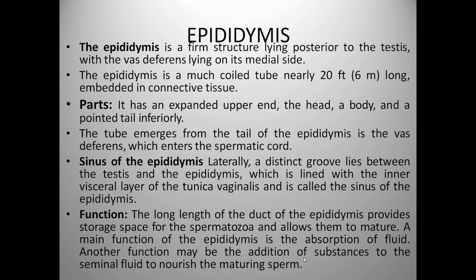Now we will see the anatomy of the epididymis. The epididymis is a firm structure lying posterior to the testis with the vas deferens lying on its medial side. It is a coiled tube nearly 6 meters long embedded in connective tissue. It has an expanded upper end called the head, a body, and a pointed tail inferiorly. The tube that emerges from the tail of the epididymis is the vas deferens, which enters the spermatic cord. Laterally, a distinct cleft lies between the testis and the epididymis, lined with the inner visceral layer of the tunica vaginalis, called the sinus of the epididymis.